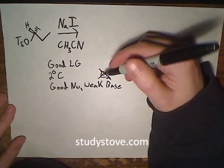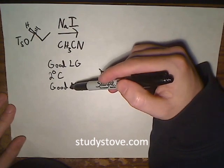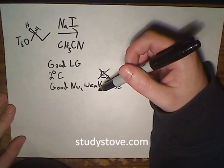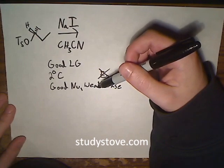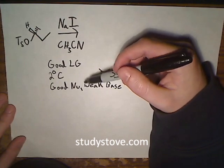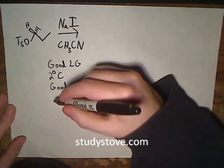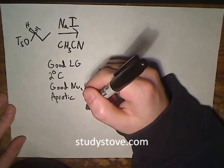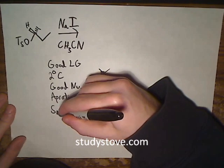At this point, given the information we have, the reaction can go either SN2 or SN1. But what's going to decide for this reaction is the solvent. Acetonitrile is an aprotic solvent, and aprotic solvents favor SN2 reactions. So that's what we're going to have here, an SN2 reaction.